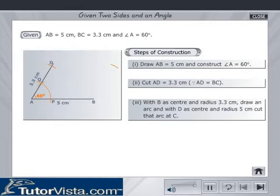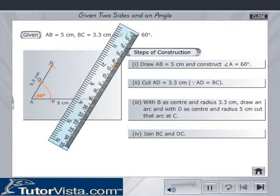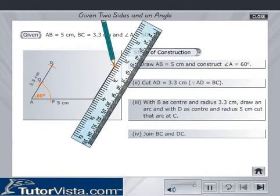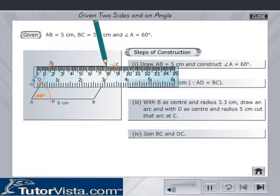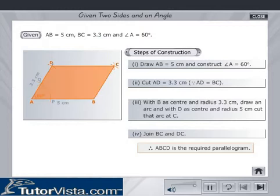With B as center and radius 3.3 cm, draw an arc. With D as center and radius 5 cm, cut the arc at C. Join BC and DC. Then ABCD is the required parallelogram.